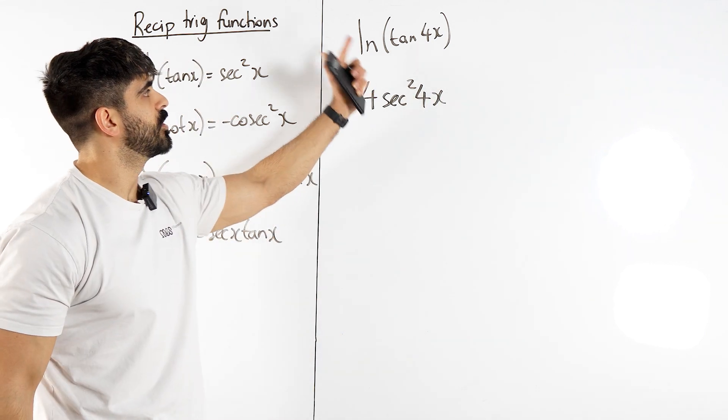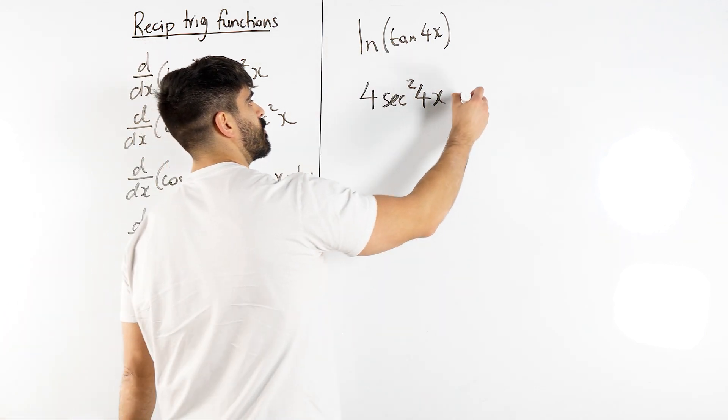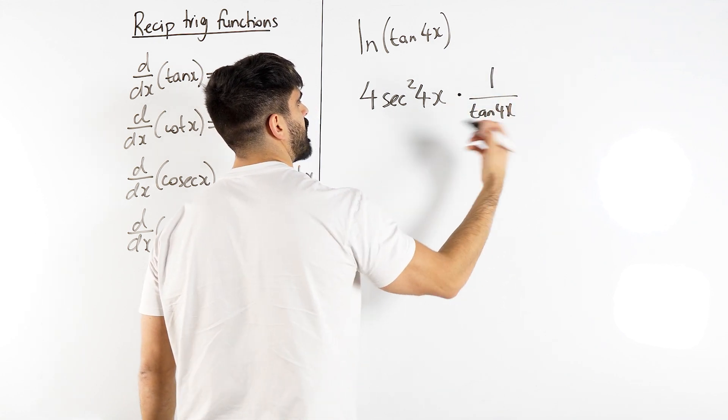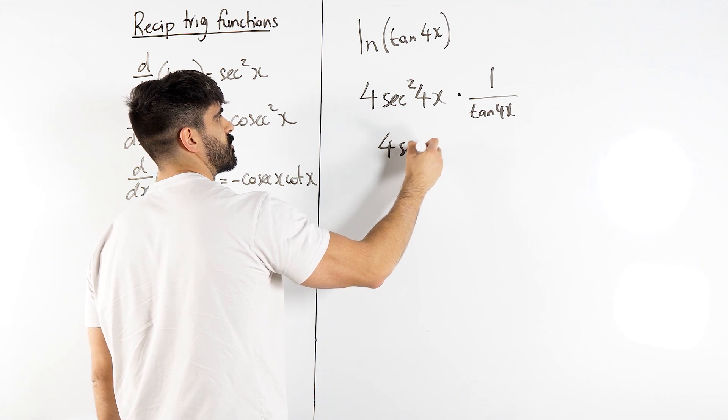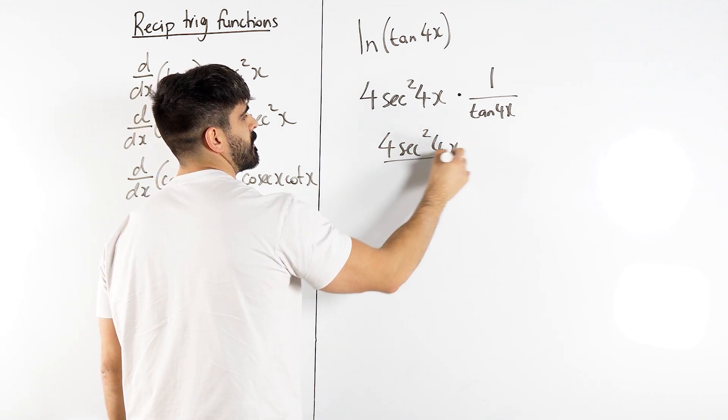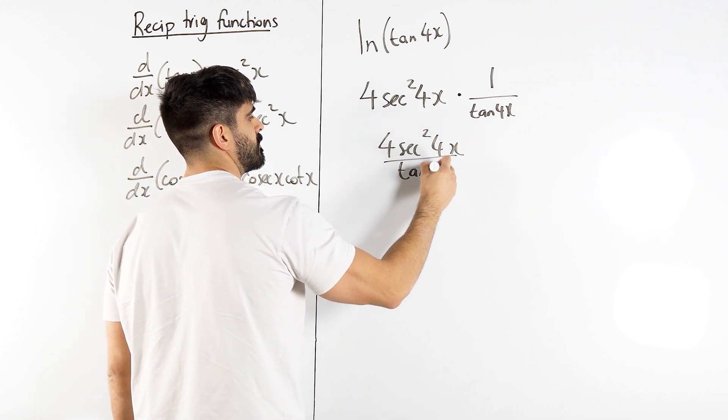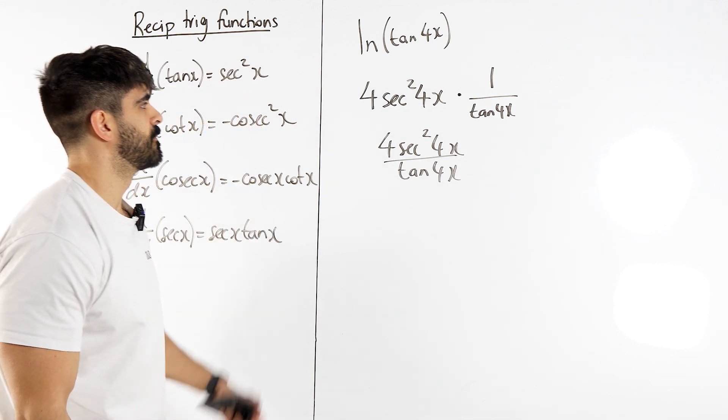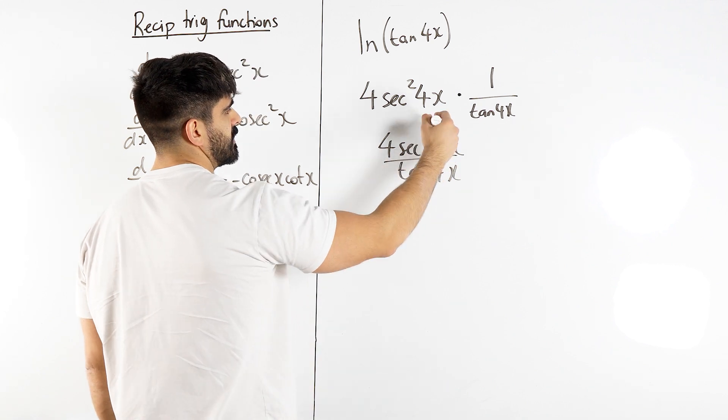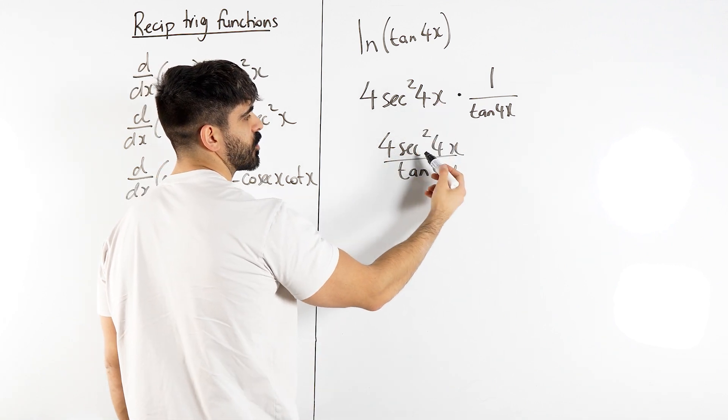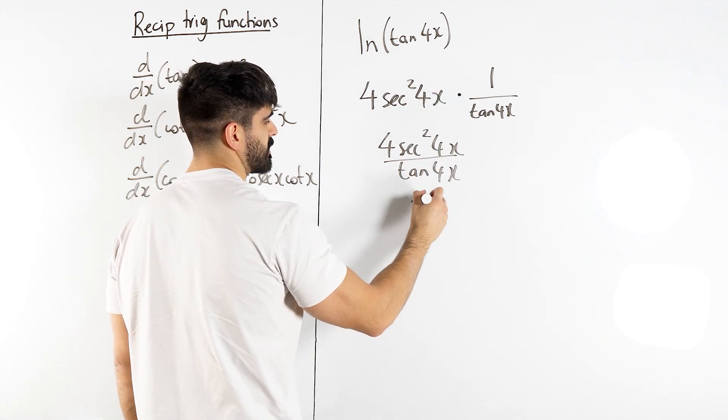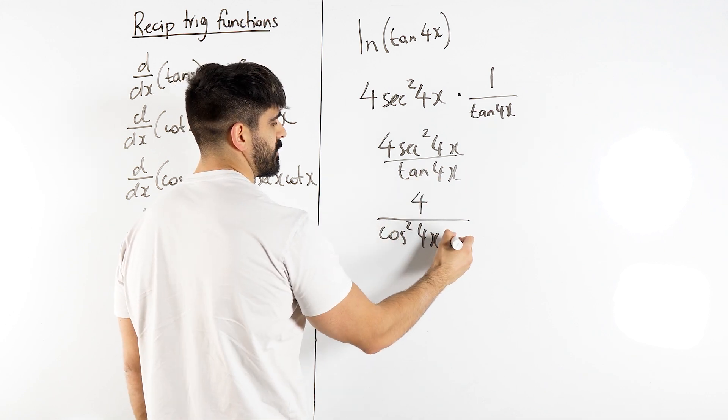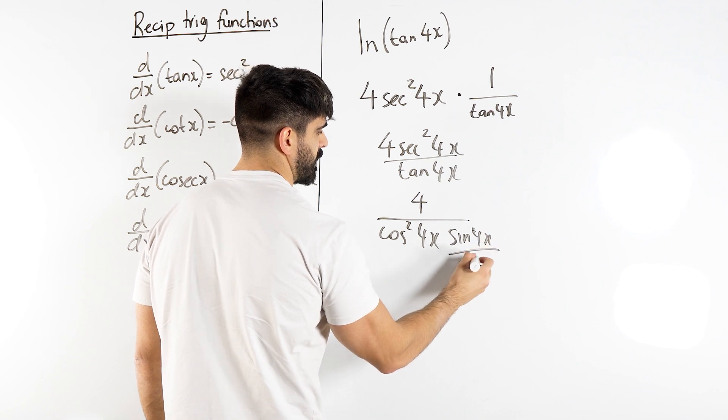Then ln reciprocates the argument, so we'll have multiplied 1 over tan 4x. We get 4 sec squared 4x over tan 4x. Let me simplify that. The sec squared 4x, that's over cos right, that's going to go in the denominator to be 4 over cos squared 4x. Then tan which was down here is sin 4x over cos 4x.